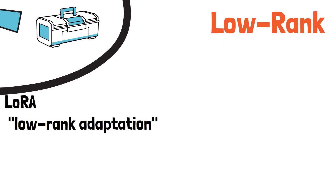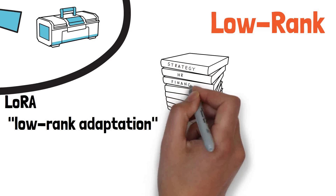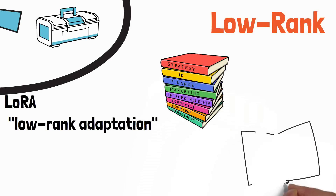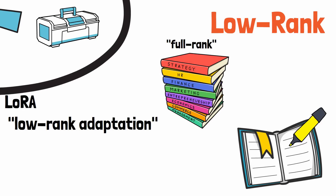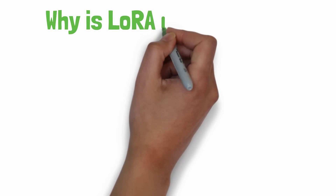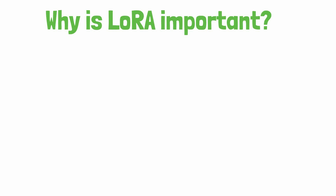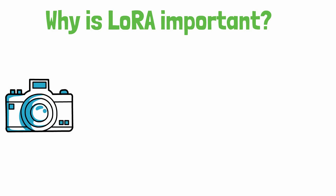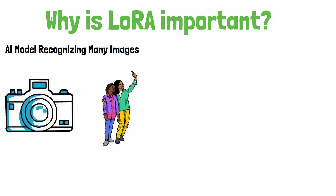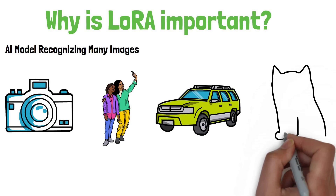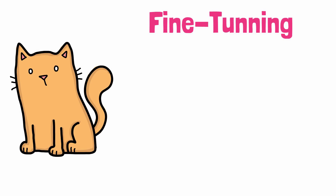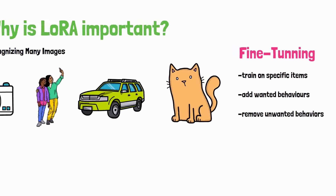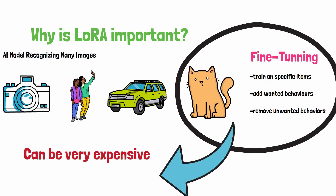LoRA stands for Low-Rank Adaptation. Low-rank refers to a mathematical technique used to create this smaller, lighter model. You can think of low-rank as reading only the highlighted parts of a book — full-rank would be reading the entire book, while low-rank is reading just the important highlighted bits. For example, you can fine-tune a large advanced AI model trained on all sorts of images to do a related task, like recognizing images of cats specifically, by making small adjustments. You can also fine-tune it to add behaviors you want or remove behaviors you don't.